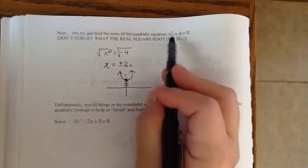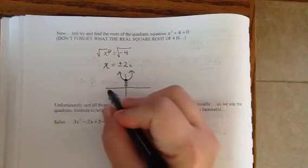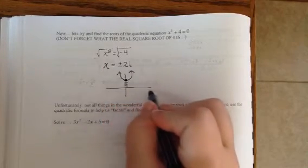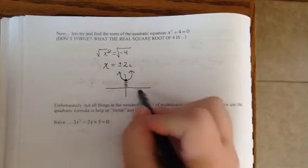But we still have to account for the roots or the zeros. And since this doesn't have any, or doesn't quote-unquote appear to have any x-intercepts on this number line, this is the real number line, which means the two zeros are imaginary. They don't fall on this number line.